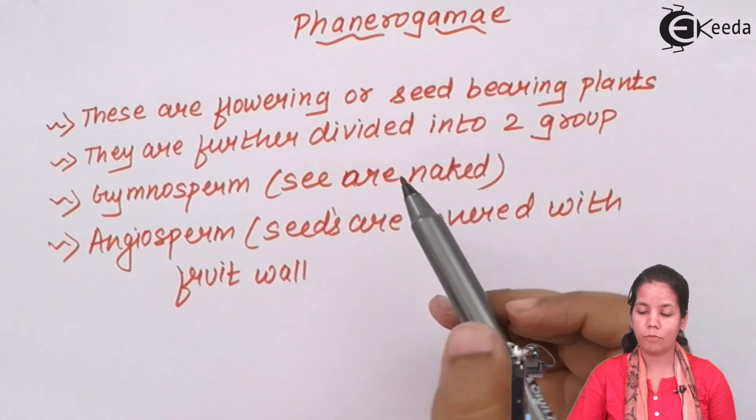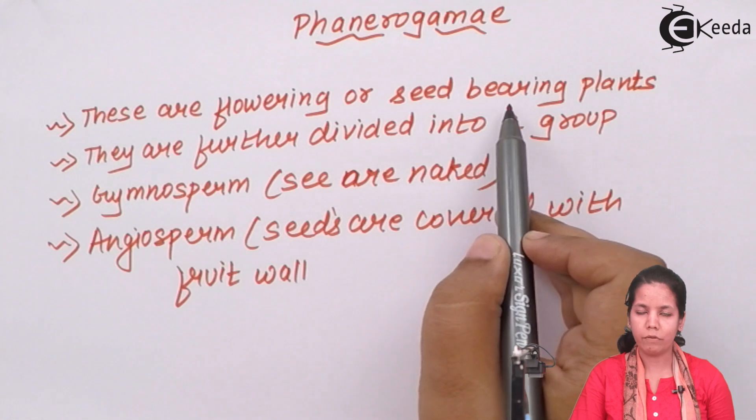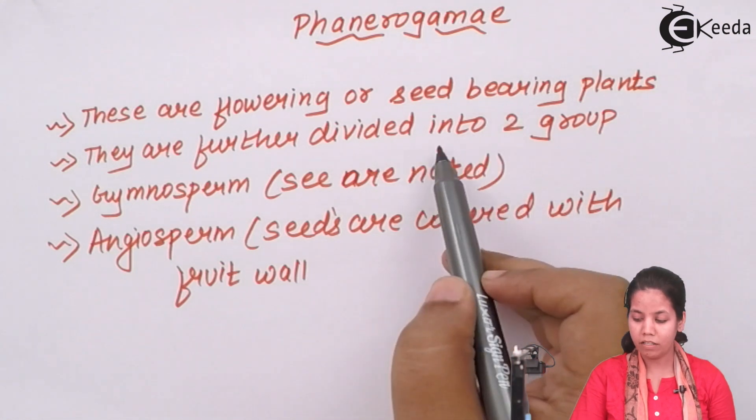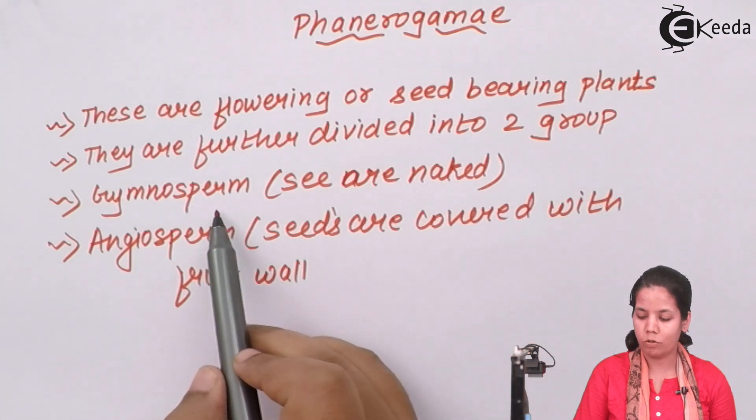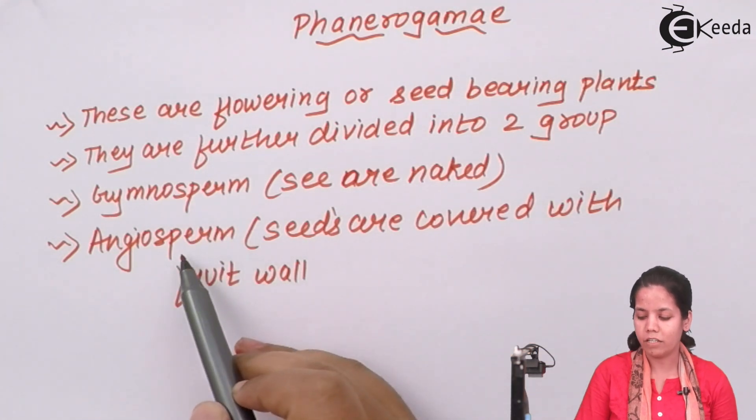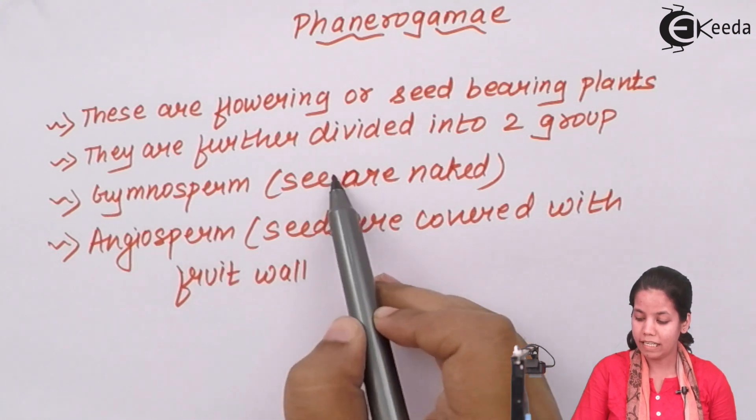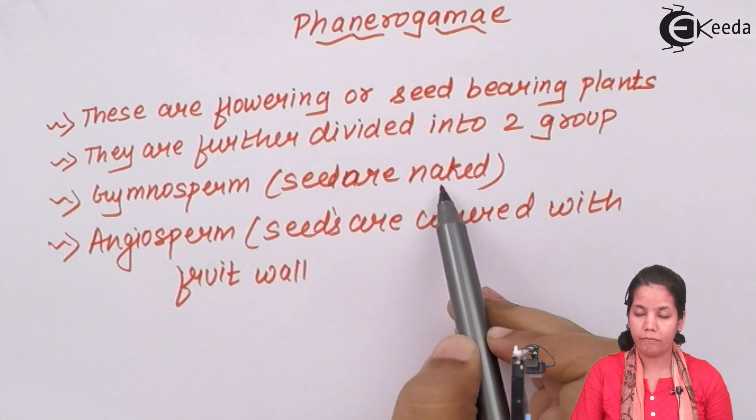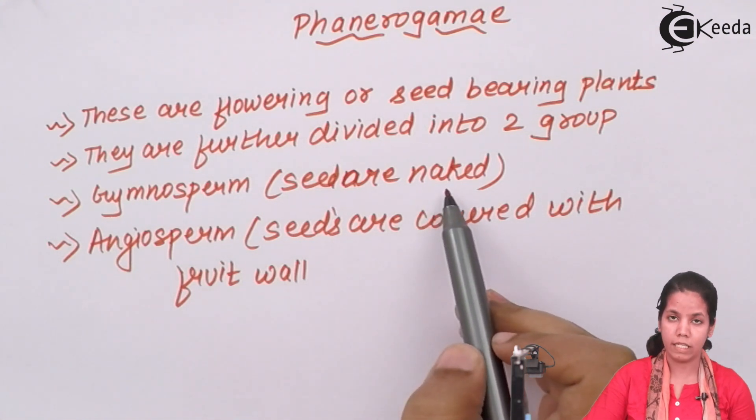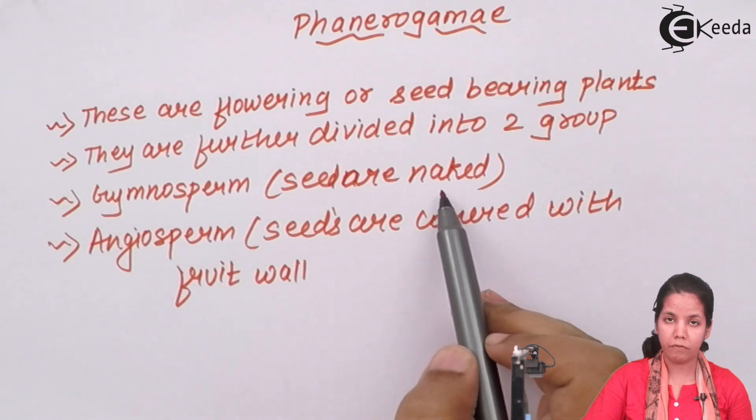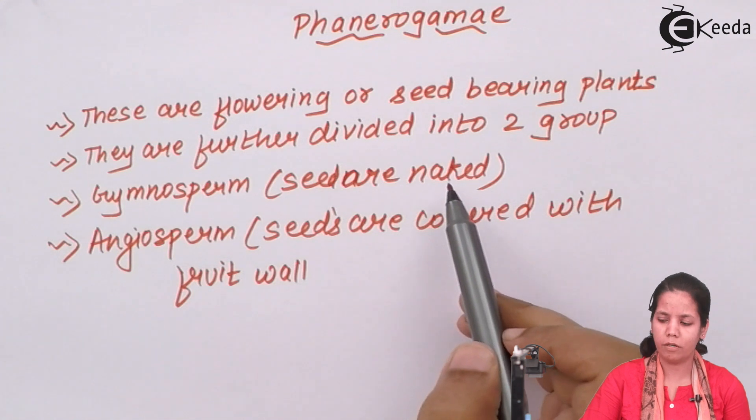Your angiosperm and gymnosperm belongs to Phanerograms family. These are flowering or seed bearing or producing plants. And they may be further divided into two different categories. The first category is the gymnosperms and another category is angiosperms. A date plant could be a gymnosperm and there, the seed of these plants are naked. When I say this, it means they do not have a covering of fruit on their seeds. If fruit is not present, then the flower won't be present. If flower won't be present, then there was no sexual reproduction.